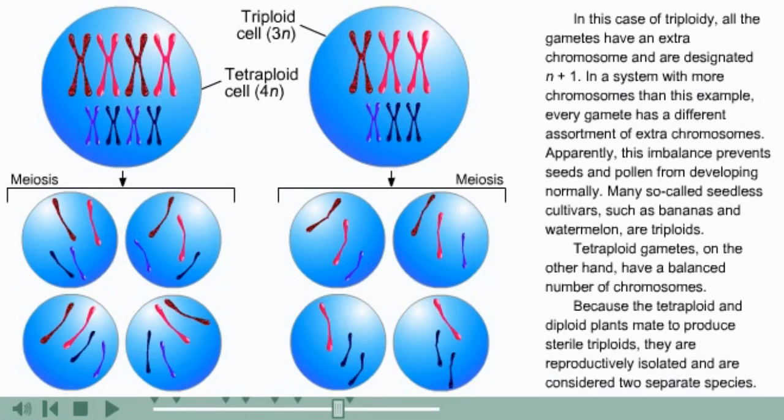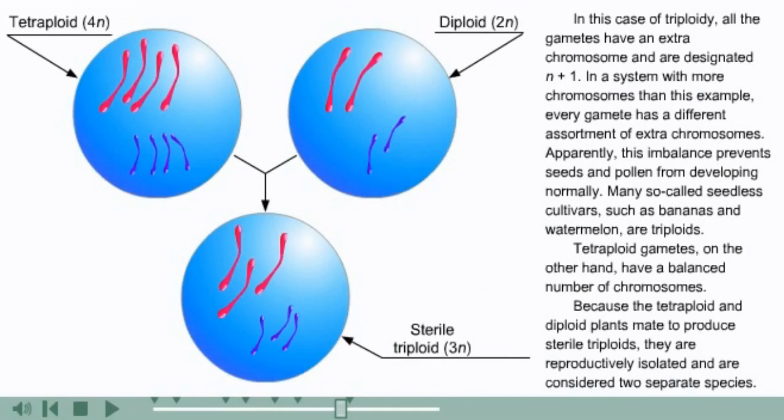Tetraploid gametes, on the other hand, have a balanced number of chromosomes. Because the tetraploid and diploid plants mate to produce sterile triploids, they are reproductively isolated and are considered two separate species.